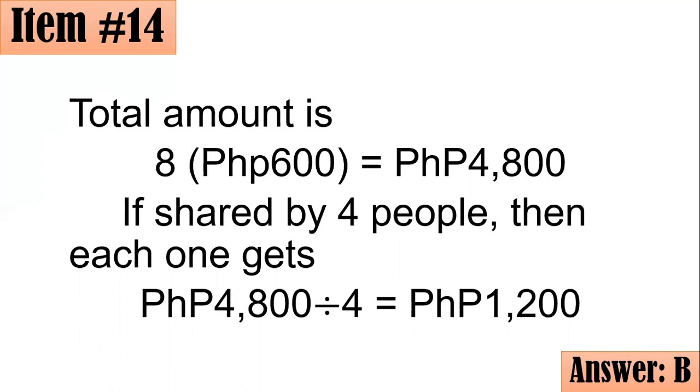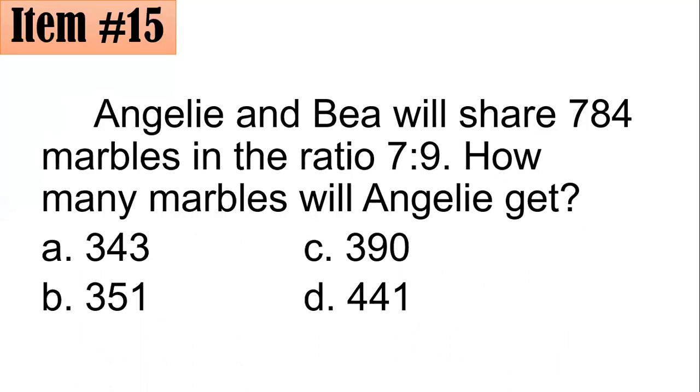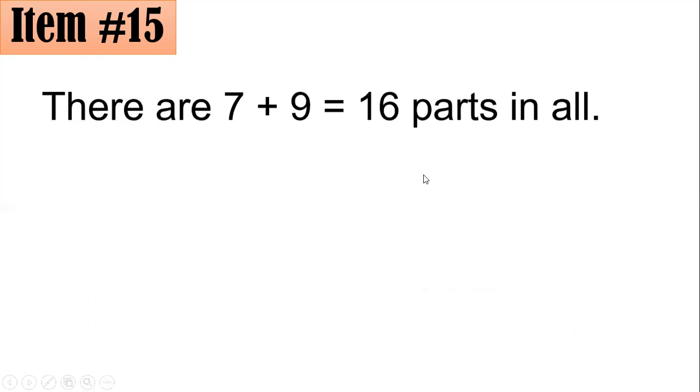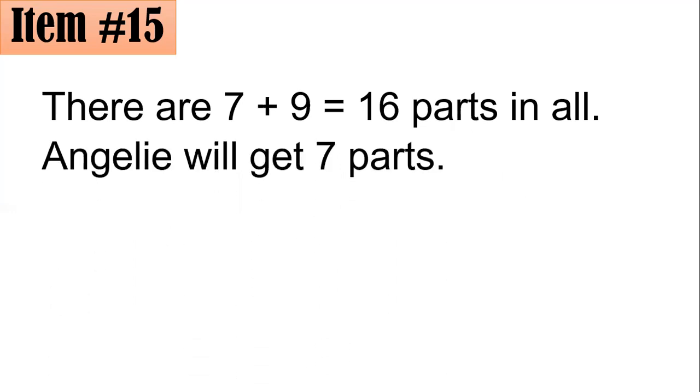Item number 15. Anjali and Bea will share 784 marbles in the ratio 7 is to 9. How many marbles will Anjali get? Is it 343, 351, 390, or 441? This is an example of a partitive proportion problem. Anjali will get 7 parts and Bea will get 9 parts. That tells us there are 16 parts in all. Out of the 16 parts, Anjali will get 7 of these parts.